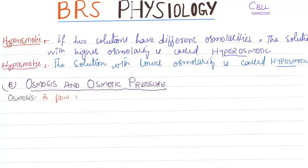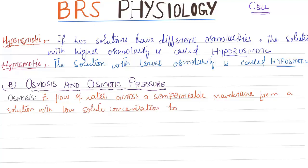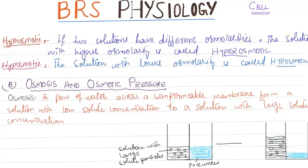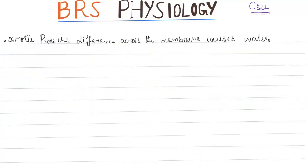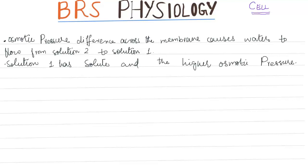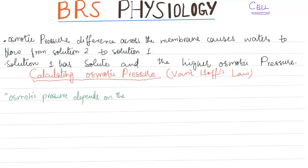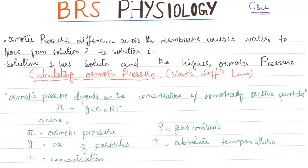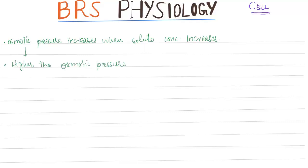Osmosis is the flow of water across a semi-permeable membrane from a solution with low solute concentration to one with high solute concentration. Osmotic pressure difference across the membrane causes water to flow from solution 2 to solution 1, as shown in the figure. Solution 1 has the solute and the higher osmotic pressure. By Van't Hoff's law, osmotic pressure depends on the concentration of osmotically active particles — greater solute concentration means greater osmotic pressure, and higher osmotic pressure means greater water flow into that solution.